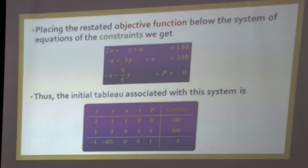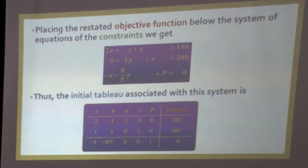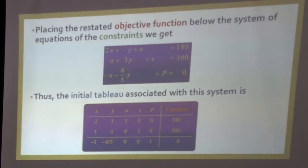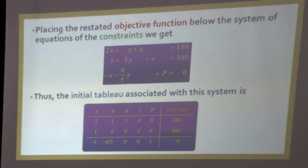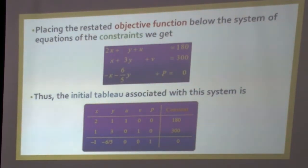In the initial simplex table, the first row contains the coefficients of X, Y, U, V, P in the first equation. The coefficient of X is 2, of Y is 1, of U is 1, and V and P are 0; thus the first row is: 2, 1, 1, 0, 0 | 180. Similarly, the other two rows are written for the second equation and the objective function row.